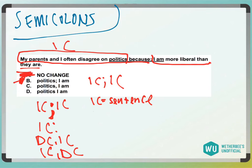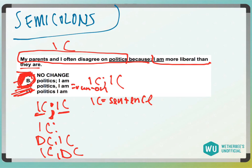We know that these are two independent clauses, so C is definitely wrong — that would be a run-on. D would also be a run-on because it's two independent clauses without any punctuation. So we're left with answer choice B. Semicolon: left is a sentence, right is a sentence. It's the only thing a semicolon does. Make sure you memorize that — answer choice B.